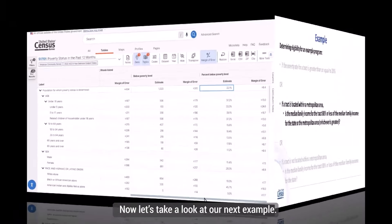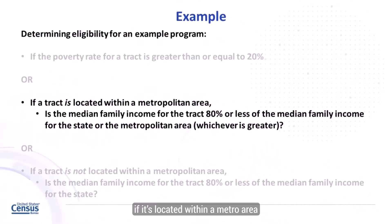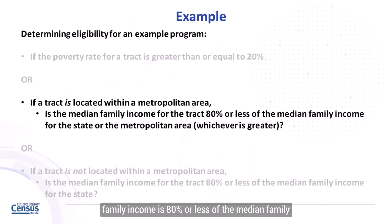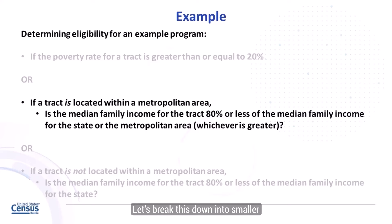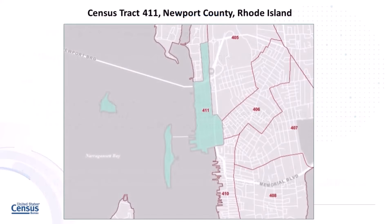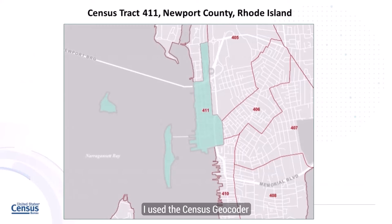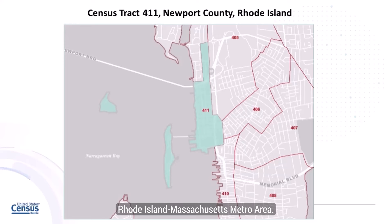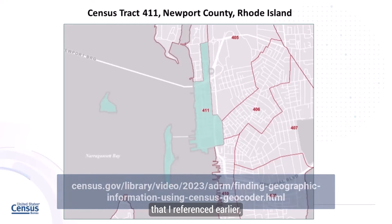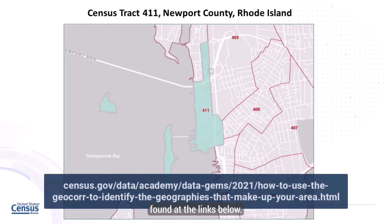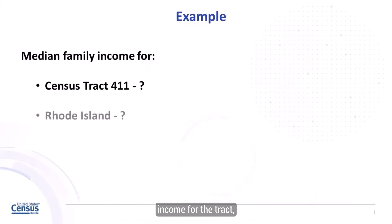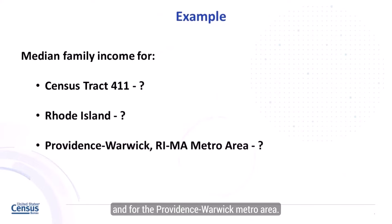Now let's take a look at our next example. The tract is eligible if it's located within a metro area and its median family income is 80% or less of the median family income for the state or metro area, whichever is greater. We're going to look at Census tract 411, also in Newport County, Rhode Island. I used the Census Geocoder and the Missouri State Data Center's GeoCore tool to determine that this tract is part of the Providence-Warwick, Rhode Island-Massachusetts metro area. The next step is to find the median family income for the tract, for all of Rhode Island, and for the Providence-Warwick metro area.